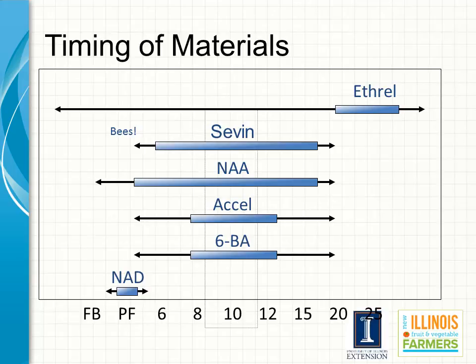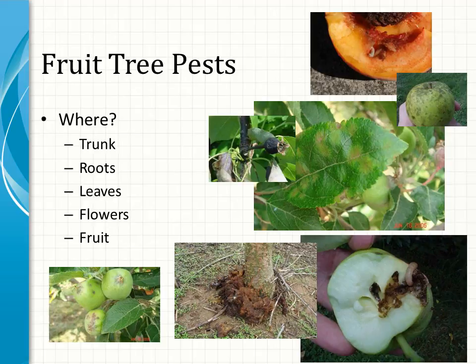Each thinning agent has an optimal application window, and most chemical thinning is done between petal fall and 15mm fruit size. Whether your fruit production system will be certified organic or conventional, pest management is a significant component of all fruit production, and most especially tree fruit production. Throughout your upcoming session, pests of tree fruit and the integrated pest management approach to manage them will be further discussed.